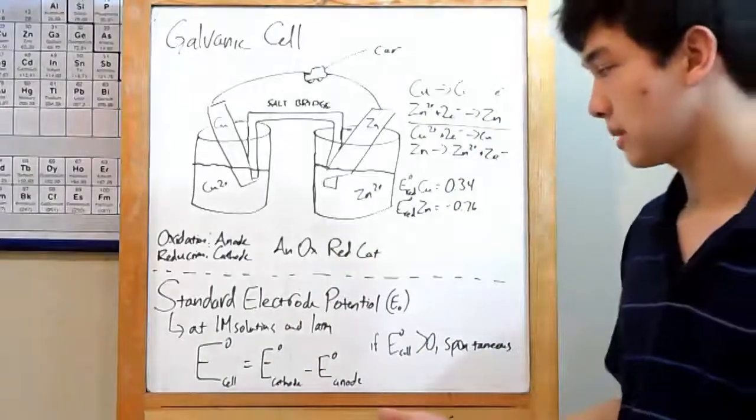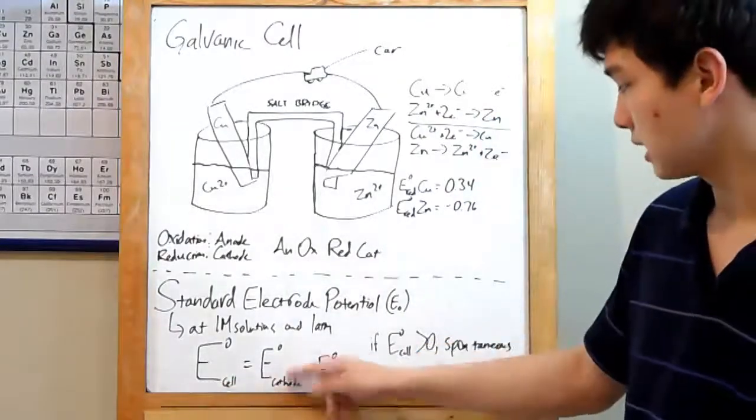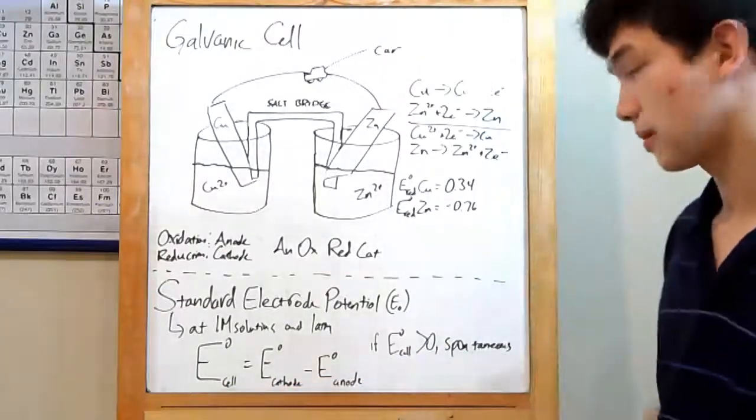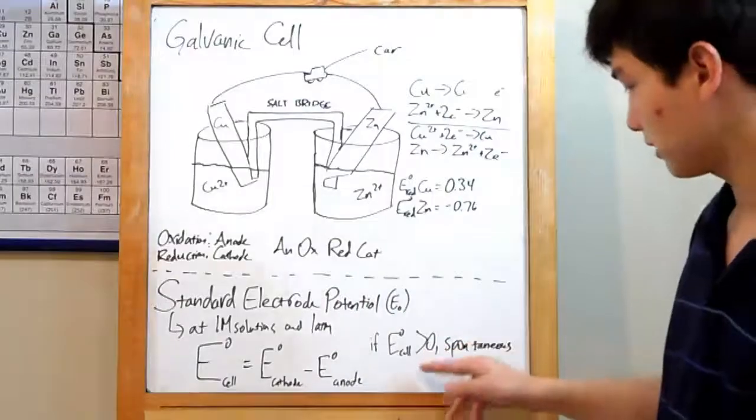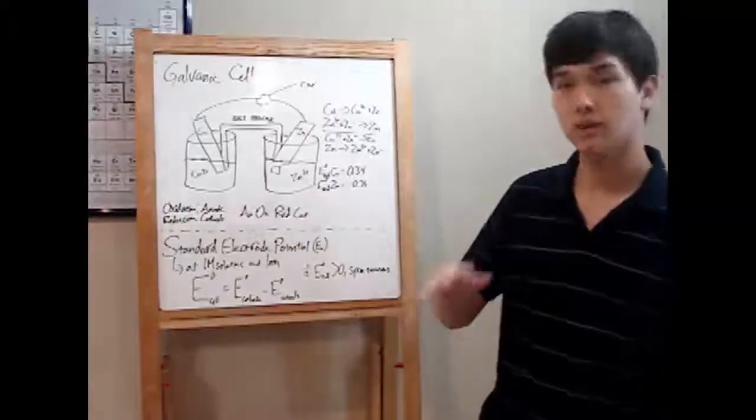In order to find the electrode potential of your cell, that's equivalent to the electrode potential at the cathode, subtracting the electrode potential of the anode. Why is this important? Well, if that E cell is greater than zero, your reaction is spontaneous. If it's below, not at all.